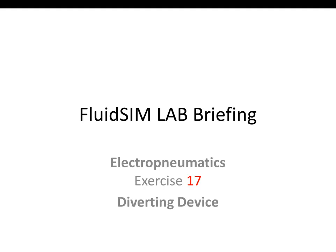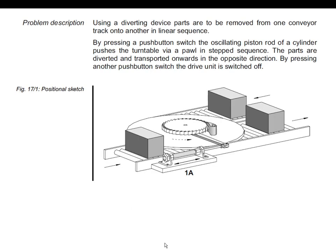Assalamu alaikum and hello to everyone. In today's fluid sim lab we are going to look at Exercise 17: Diverting Device. First of all, let us look at the problem at hand. We have two conveyor belts, one and two, and a part which is moving from one end to another.